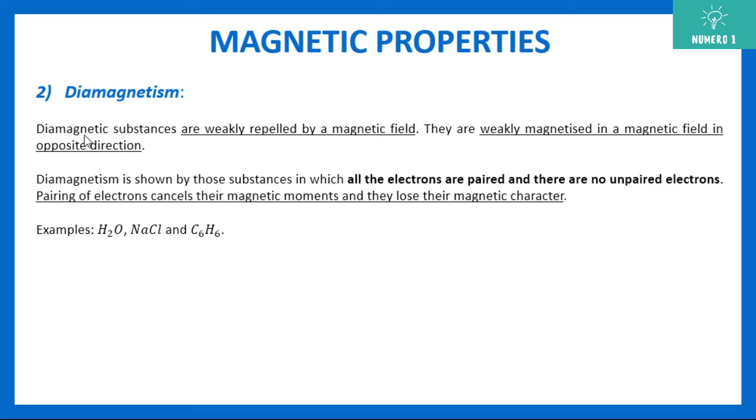Same way we have diamagnetic substances. Diamagnetic substances are those which are actually weakly repelled by magnetic field. So here they get magnetized but in opposite direction. And this happens because all the electrons are paired or in other way you can say that there are no unpaired electrons. Very, very important diamagnetic substances. They have all the electrons paired or you can say no unpaired electrons are present. So here we see that the pairing of electron cancels their magnetic movement and they lose their magnetic character. Example is H2O, NaCl, C6H6. So these are weakly repelled, whereas paramagnetic were weakly attracted. So these are the two types.